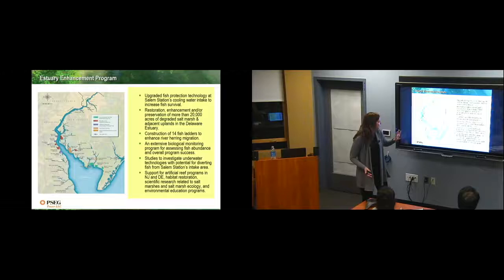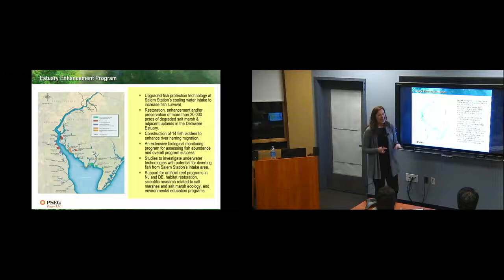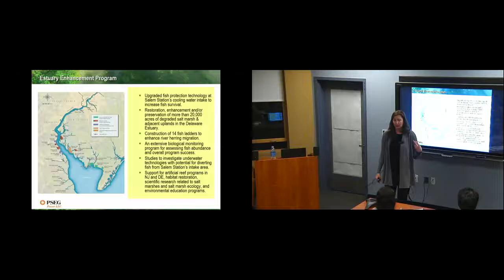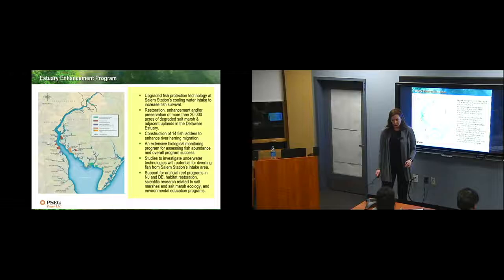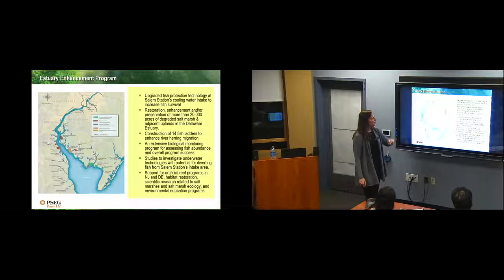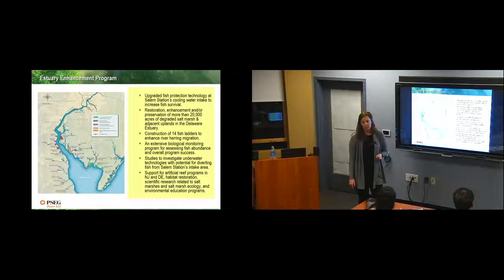The estuary program. These are the sites around the Delaware estuary that we take care of. Everything that we do in New Jersey, we do in Delaware. Because the closest resident to our nuclear plant is actually in Delaware. We have upgraded fish protection system. Restored over 20,000 acres. Fish ladders. Extensive biological monitoring. If anybody's into environmental data, I could hand you over to our estuary program and they could just boggle your mind with all the data that they have. Artificial reef programs that we've tried in New Jersey.